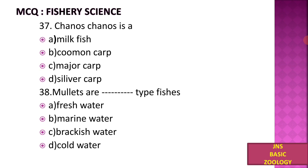Then, Chanos chanos is: A) Milkfish, B) Common Carp, C) Major Carp, D) Silver Carp. Chanos chanos is a milkfish.